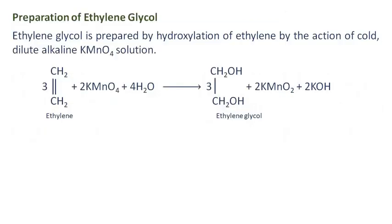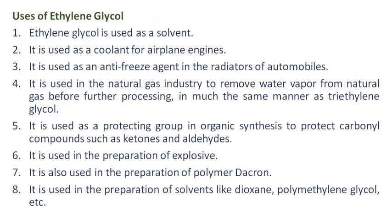Preparation of ethylene glycol: Ethylene glycol is prepared by hydroxylation of ethylene by the action of cold, dilute alkaline potassium permanganate solution.